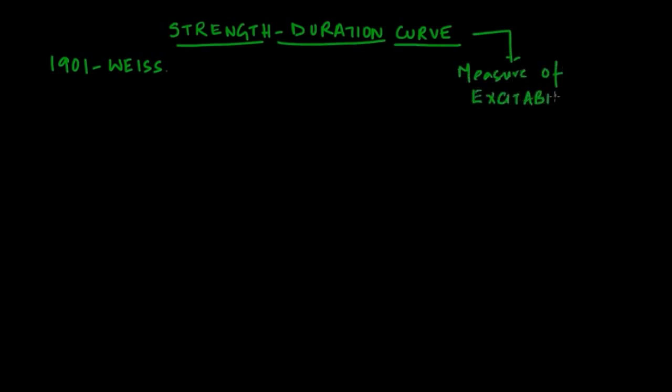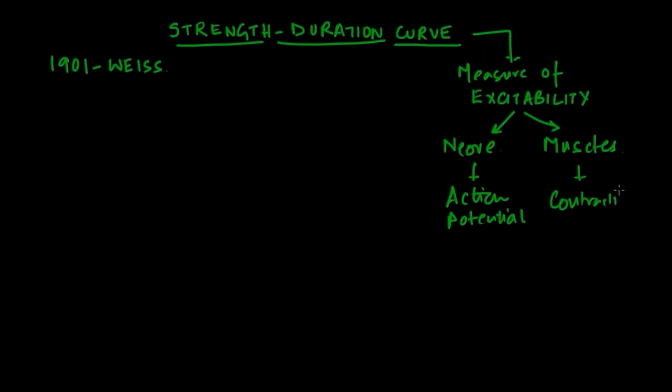The strength-duration curve essentially measures the excitability of certain tissues in our body, and the two tissues which are excitable: one being the nerve resulting in action potentials, and the stimulation of muscles resulting in contraction.